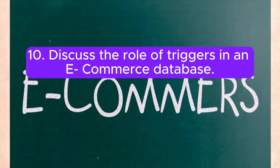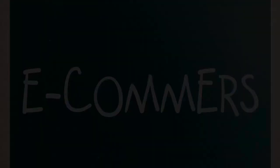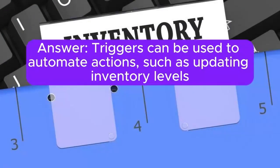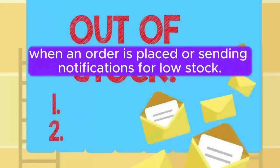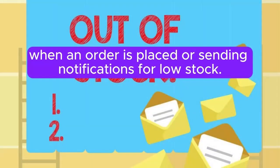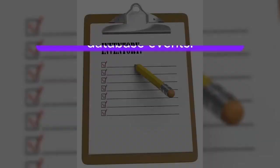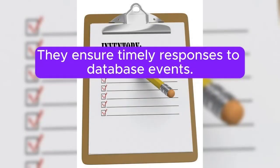Question 10: Discuss the role of triggers in an e-commerce database. Triggers can be used to automate actions such as updating inventory levels when an order is placed, or sending notifications for low stock. They ensure timely responses to database events.